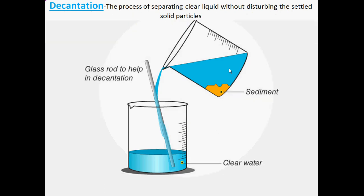We then need to separate the clear water so it can be utilized for drinking or other purposes. For that we employ the technique of decantation — the process of separating clear liquid without disturbing the settled solid particles. The water is slowly, with the help of a glass rod, poured into a beaker. The clear water is now available for use, and the solid sediment remains behind.